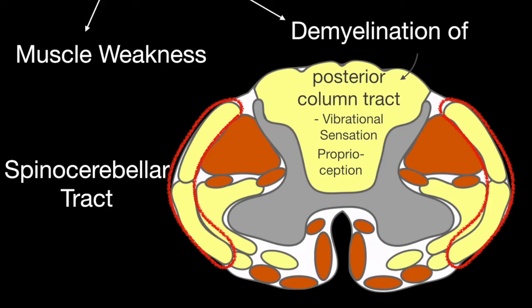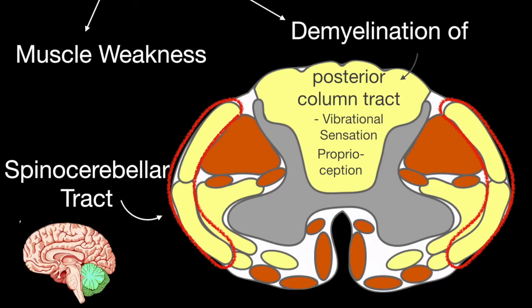The spinocerebellar tract is also demyelinated — this is the part of the spinal cord that carries information to the cerebellum. Thus, demyelination of that tract also leads to ataxia.